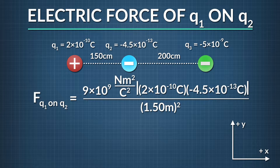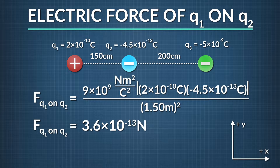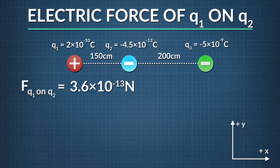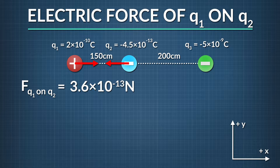We find that the electric force magnitude of q1 on q2 is 3.6 times 10 to the negative thirteenth newtons. Since q1 and q2 have opposite signs, they attract one another. That means q1 pulls q2 in the negative x direction.